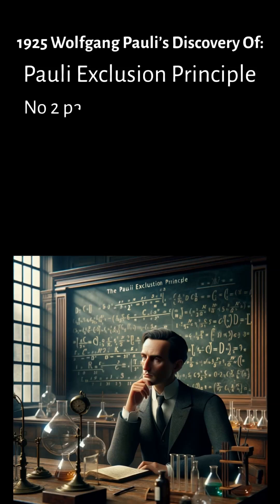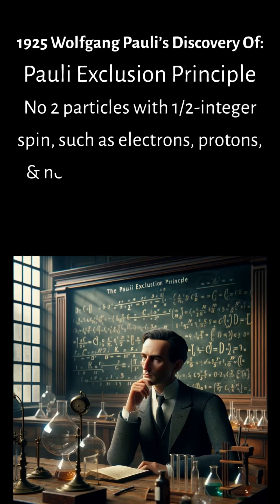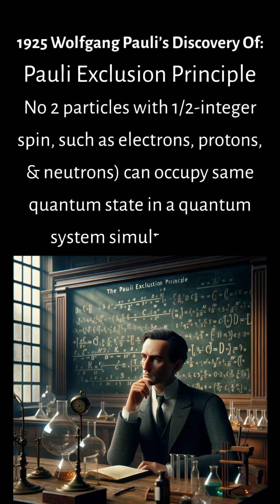This principle states that no two fermions, particles with half-integer spin, such as electrons, protons, and neutrons, can occupy the same quantum state within a quantum system simultaneously.